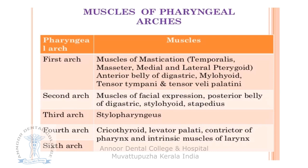The second arch muscles are the muscles of facial expression, posterior belly of digastric, stylohyoid, and stapedius. These are all supplied by the facial nerve. The third arch muscle is the stylopharyngeus, which is supplied by the glossopharyngeal nerve.